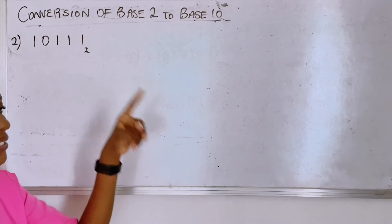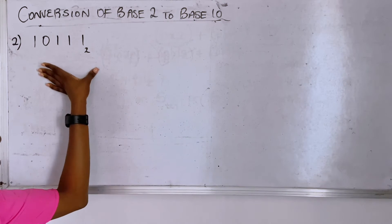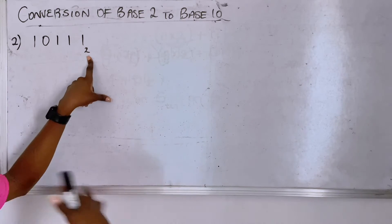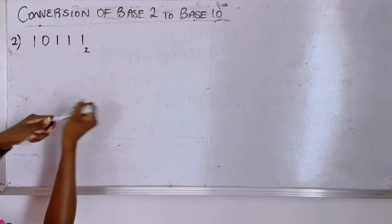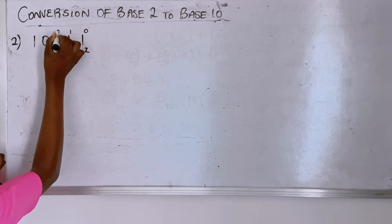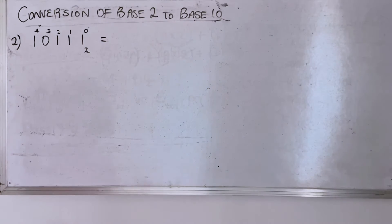Which is what you have here with its base indicated. And then what you want to start with is you start with the power from here - of course it's zero, one, two, three, four. That way you're able to know the powers to multiply. So starting with this, one times your base raised to the power it has here.